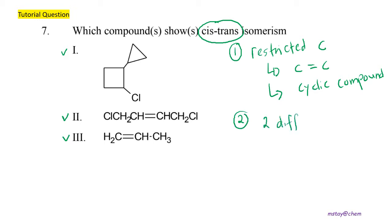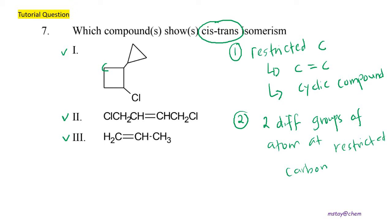The second requirement is that there are two different groups of atoms at each restricted carbon. When we look at one restricted carbon that already shows two bonds, the other two bonds are hydrogen — so those are not restricted carbons. However, for the carbon with a cyclopropyl group, one substituent is cyclopropyl and another is hydrogen — two different groups. For the carbon with one bond to Cl, it still has another bond to hydrogen — so this is also a restricted carbon, and option one is an answer.